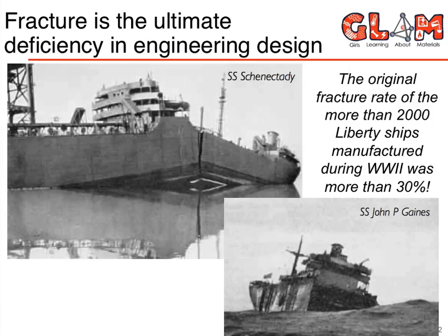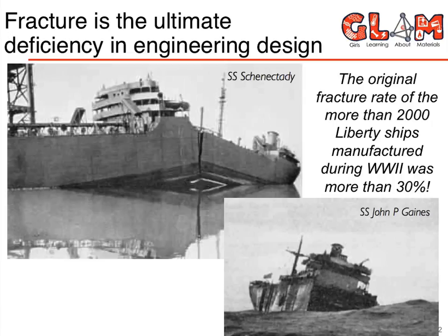Fracture is the ultimate failure when it comes to engineering design. There are two cases where fracture still occurs: somebody messed up big time, or you put your material into a situation where it went beyond our understanding of how the material should behave. The reason fracture is so catastrophic is because it happens suddenly — when you fracture a mirror, it's not a gradual process. Our understanding of fracture behavior as a science is really not that old.